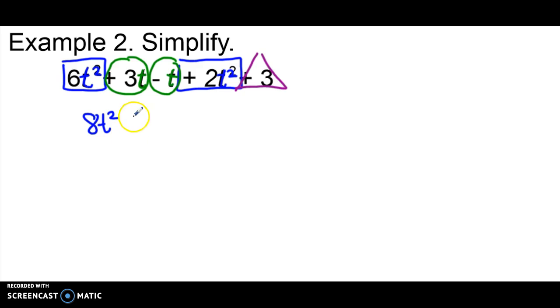Let's move on to the green circles. Now I have 3t minus t. Again, I'm going to keep my same variable but then I'm going to add together my coefficients. So my first coefficient is 3 but my second one is a little trickier. We talked before about how if we have a variable by itself, its coefficient is 1. So what I'm going to take is 3 minus 1 and that gives me a positive 2.